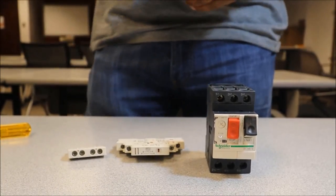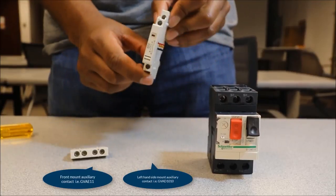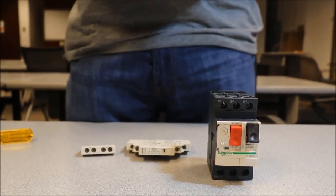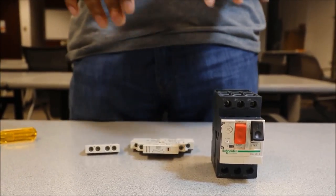This video is how to install the GV-2M aux contacts for the side mount as well as the front mount. The first thing we want to do when installing these auxiliary contacts is to make sure there is no power applied.